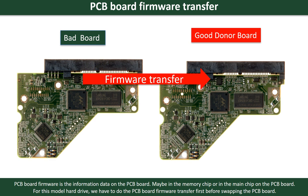PCB board firmware is the information data on the PCB board. It may be in the memory chip or in the main chip on the PCB board. For this model hard drive, we have to do the PCB board firmware transfer first, then we swap the PCB board. Otherwise, the new board will not work on the original hard drive.